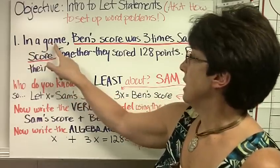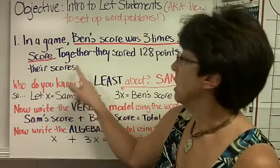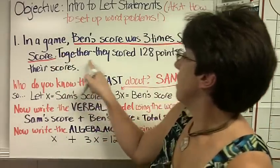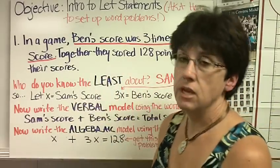Number one, in a game, Ben's score was three times Sam's score. Together, they scored 128 points. Find their scores.